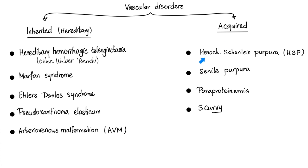The acquired vascular disorders include Henoch-Schönlein Purpura — the most common vasculitis in children — senile purpura, paraproteinemia such as multiple myeloma, and scurvy — vitamin C deficiency.